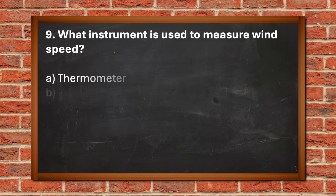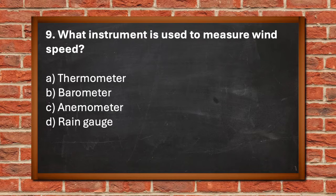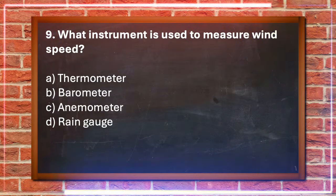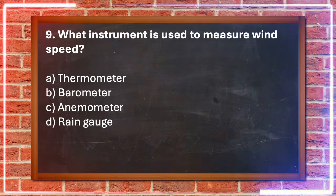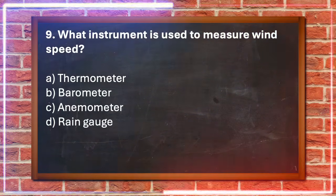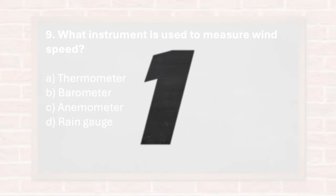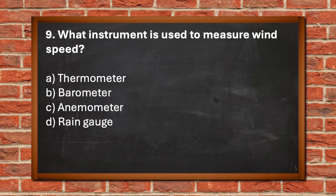Number 9. What instrument is used to measure wind speed? A. Thermometer, B. Barometer, C. Anemometer, D. Rain gauge. The answer is C. Anemometer.